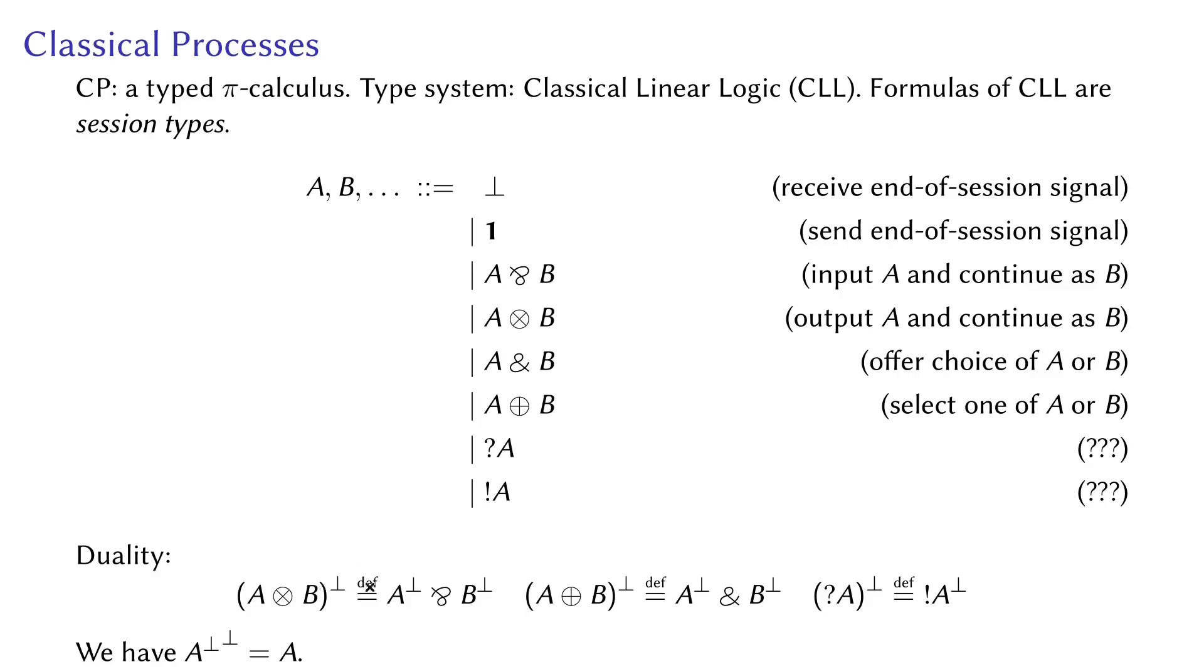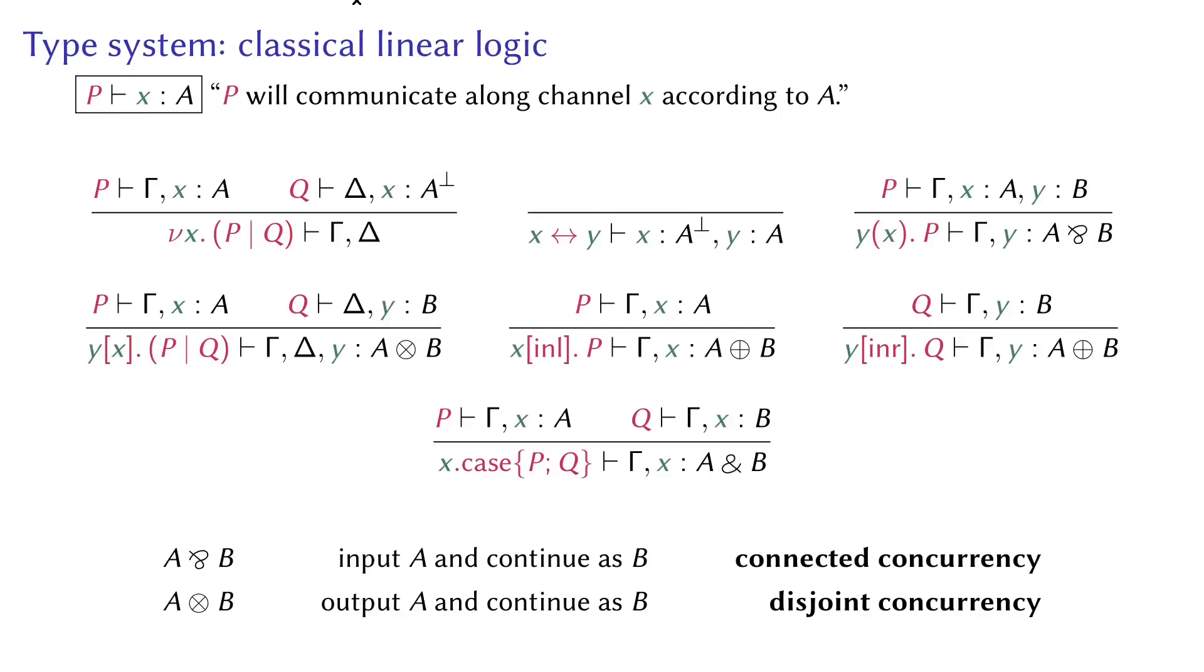Duality is defined for session types, and dual sessions can talk to each other, and the duality is apparently an involution. Next, we look at the typing rules of CP. Typing judgment will be of this shape, and it means that process P will communicate along channel X according to protocol A or type A. If I have two processes with dual channels, I can connect the channels and get a process. I can also create a forwarding process out of thin air that exposes two dual channels. If I have a process that communicates along two channels, I can make a process that communicates on only one channel. The new process will receive a second channel along the first channel, and the type will reflect that.